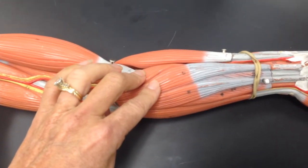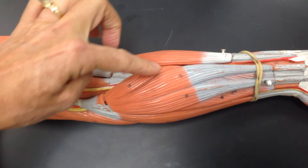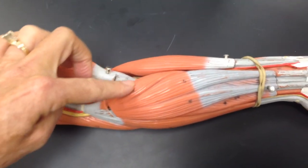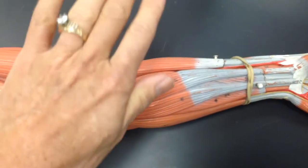Right next to the brachioradialis, we have this one right here, the pronator teres, which pronates the hand.